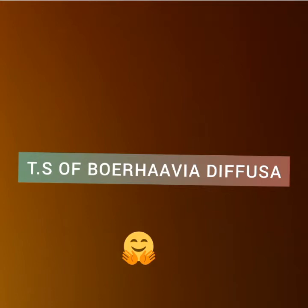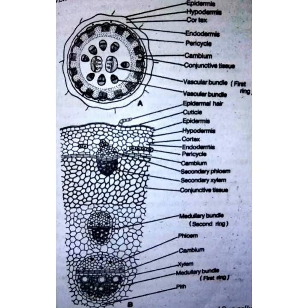You can see that it is a transverse section and the outline is circular. The first feature is the epidermis. It is single-layered, consisting of small radially elongated cells. Multicellular epidermal hairs arise from some cells. A thick cuticle is present on the epidermis, and some stomata are also present.